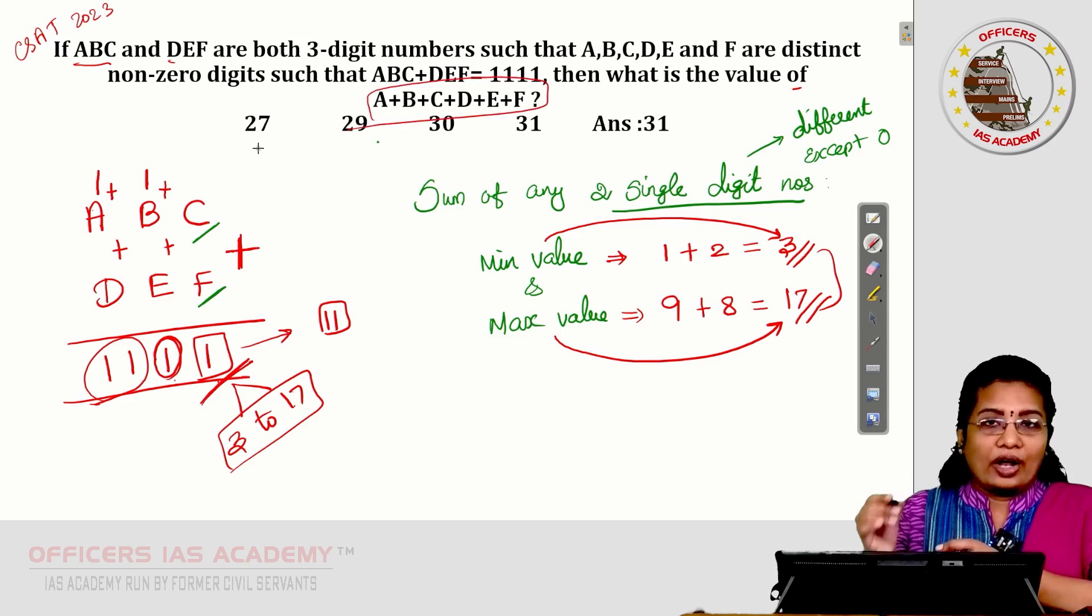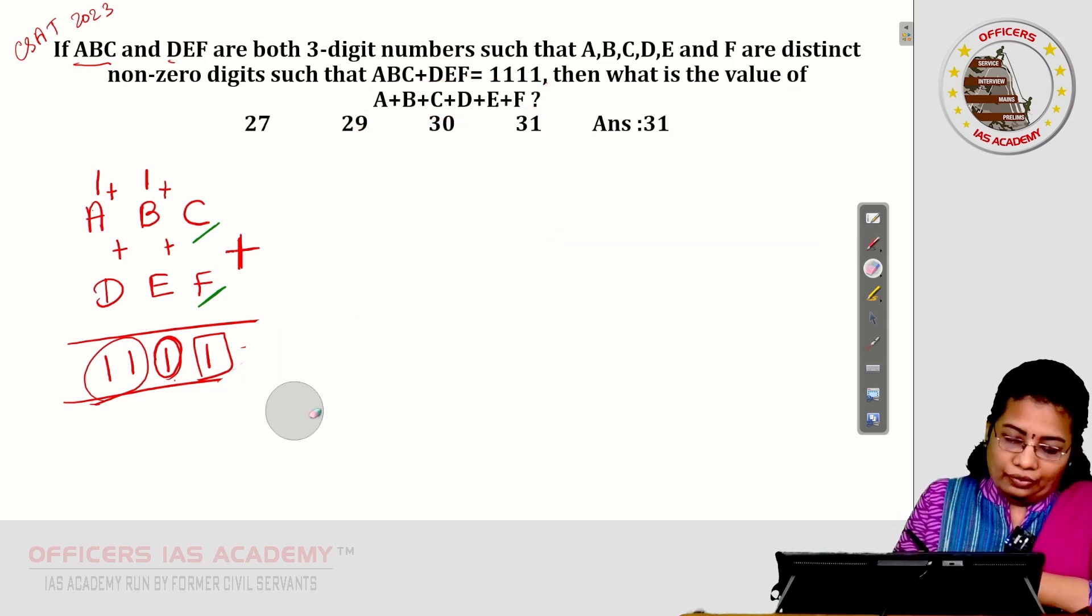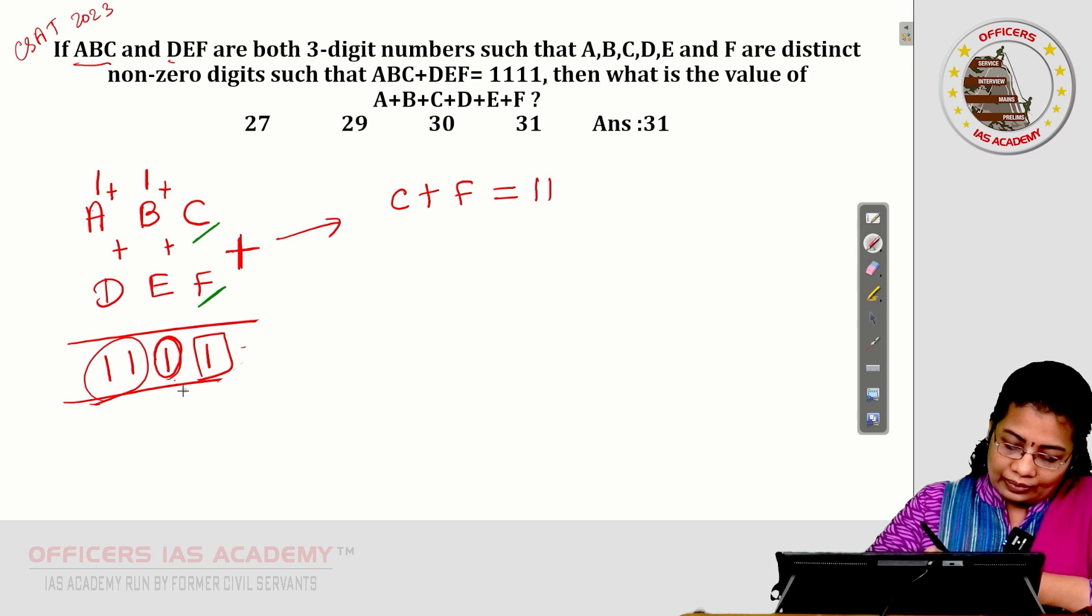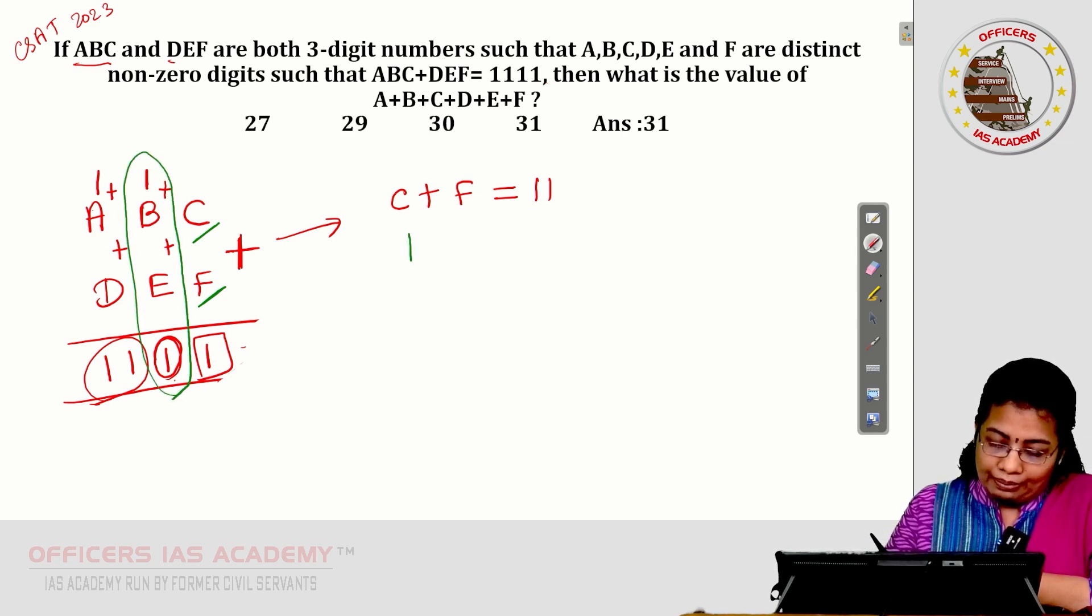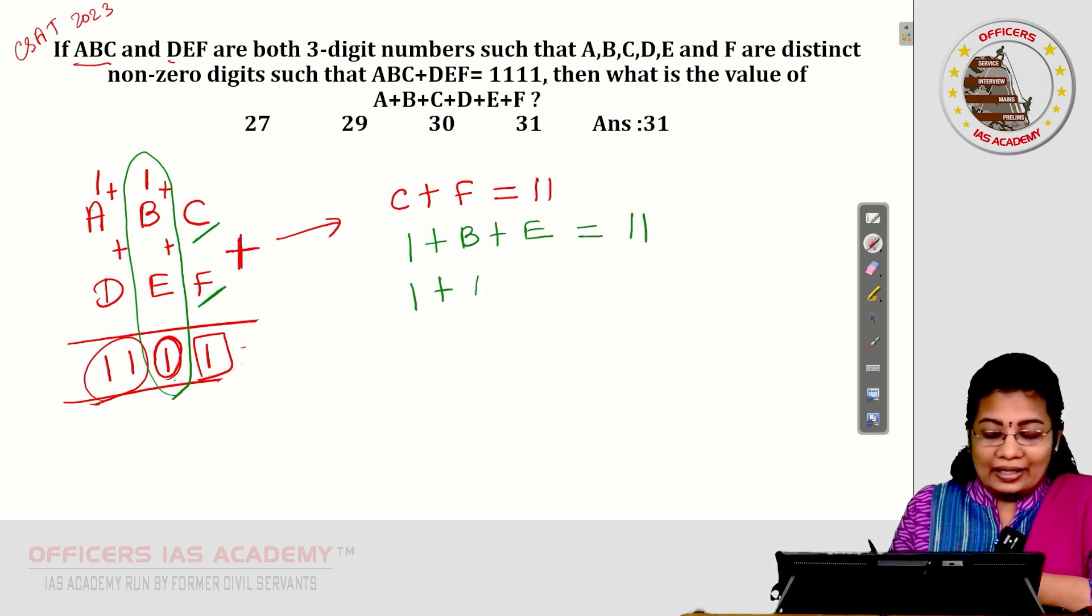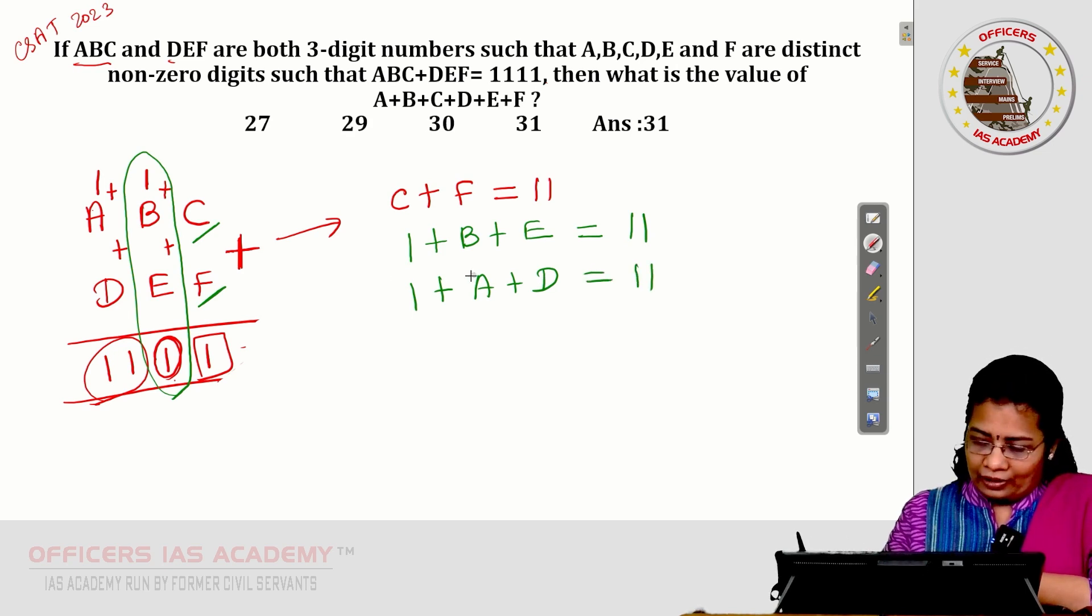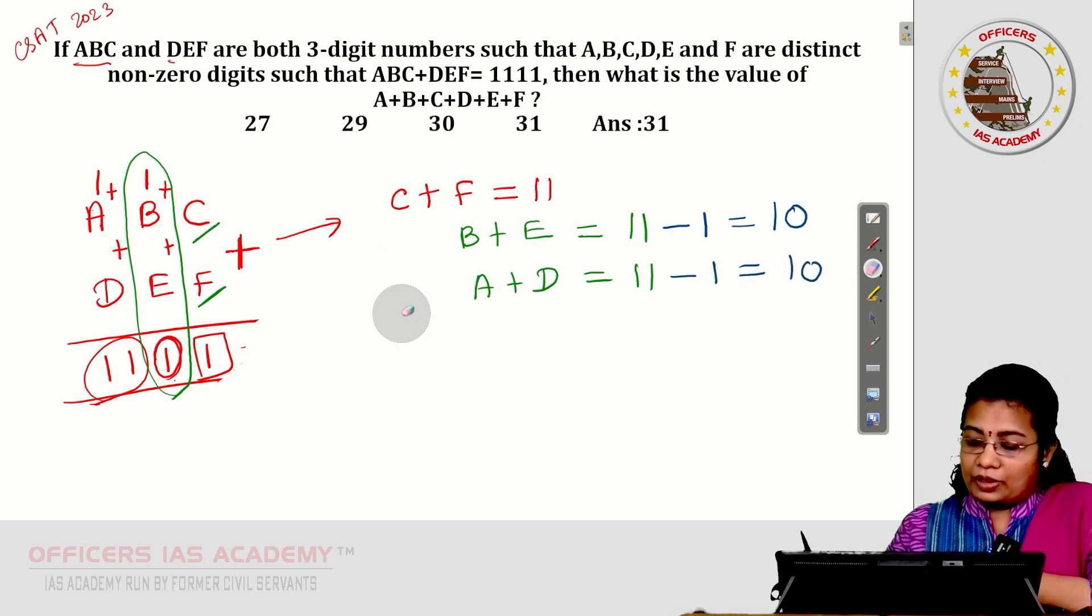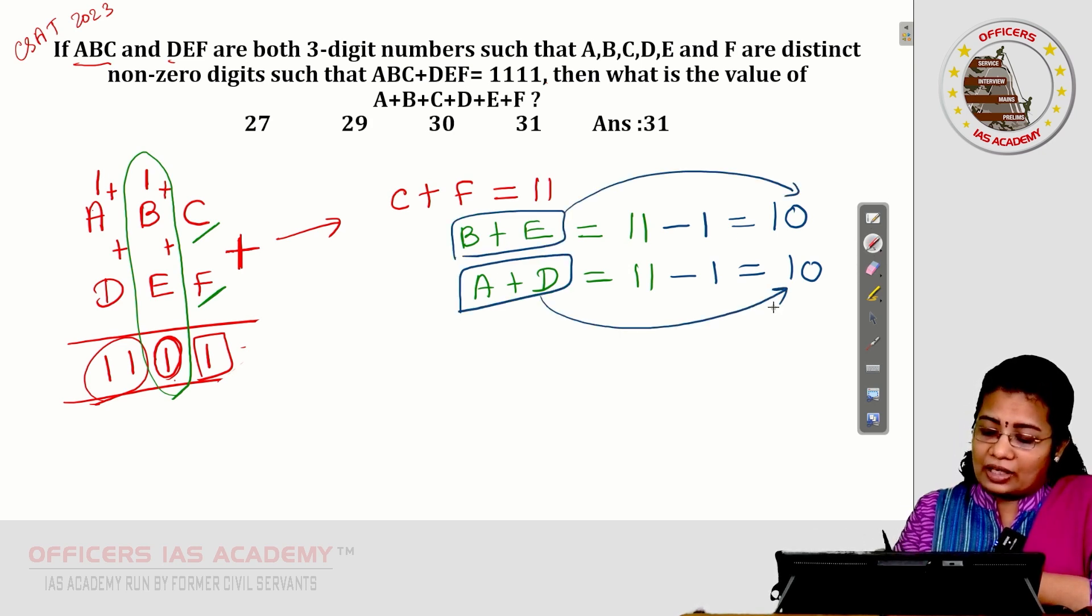After this, you want to take A to F the sum. What we got is C plus F equals 11 and 1 plus B plus E equal to 11 and 1 plus A plus D equal to 11. So, this 1 I bring this side. 11 minus 1 is 10. B plus E is 10. A plus D also 10. C plus F is 11.